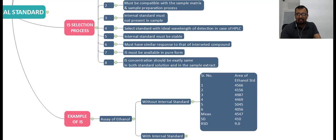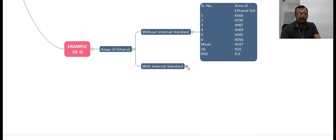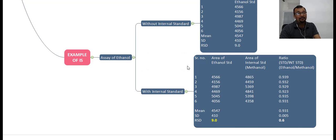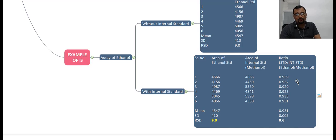Now, in a similar experiment but using an internal standard, methanol is added as the internal standard. Here are the peak responses of the methanol. As part of the process, you calculate the ratio of the ethanol area to the methanol area — for the first injection 0.939, for the second injection 0.932, and similarly for all 6 injections. Calculate the mean of the ratio and the percent RSD comes out to just 0.6%. You can see how the internal standard can help you when you are getting high variability or high percent RSD during system suitability evaluation. Thank you very much for watching, and I will meet you in the next video.